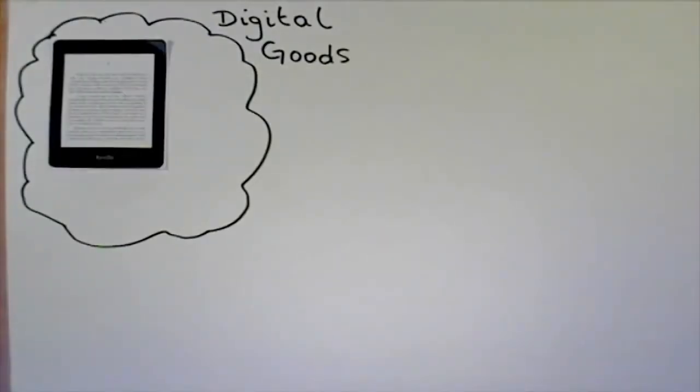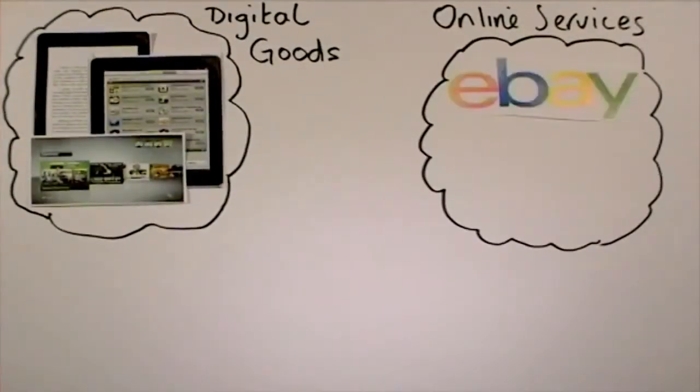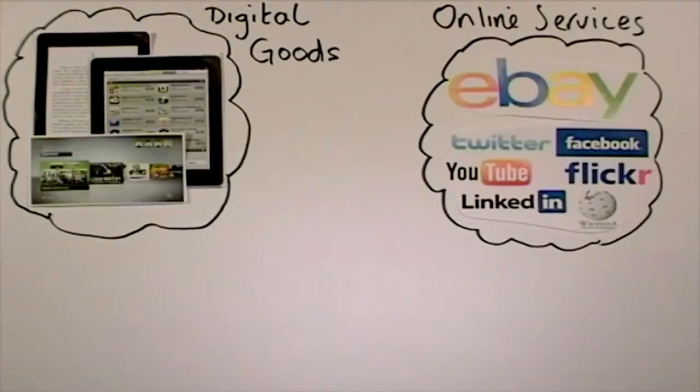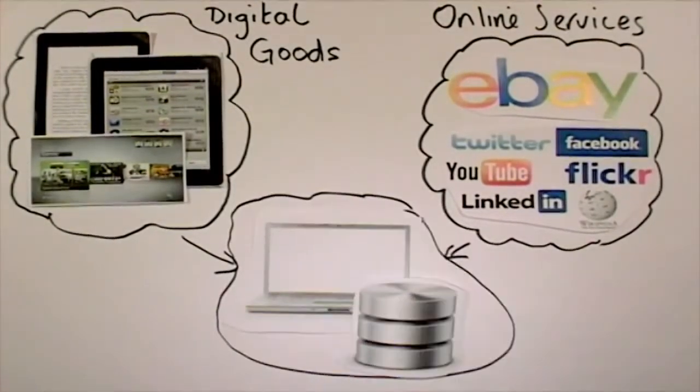Digital goods such as electronic books and software, and online services such as auctions and social networking, are all provided by and operated by some kind of information system.